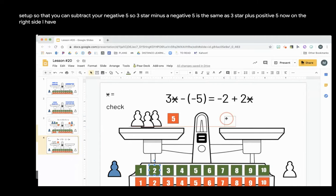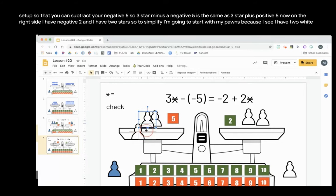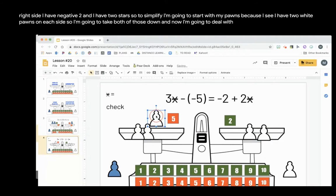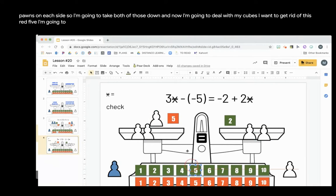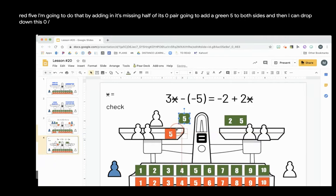Now on the right side I have negative 2 and I have 2 stars. To simplify, I'm going to start with my pawns because I see I have 2 white pawns on each side. So I'm going to take both of those down. Now I'm going to deal with my cubes. I want to get rid of this red 5. I'm going to do that by adding in the missing half of its zero pair. I'm going to add a green 5 to both sides, and then I can drop down this zero pair.